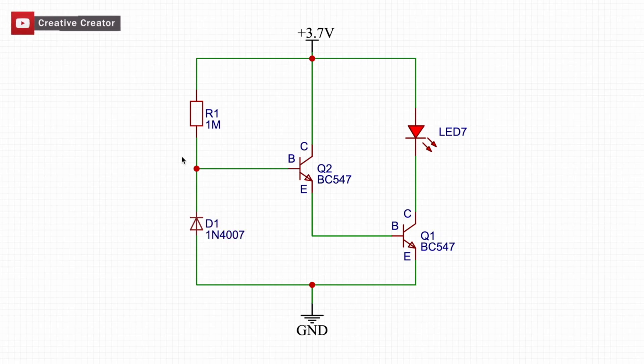We all know the current flows from the shortest path. So current goes from this 3.7 volt to this 1 meg resistor directly to the ground through this diode. So no current will flow from this transistor.